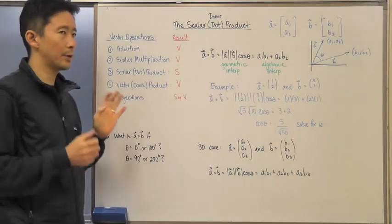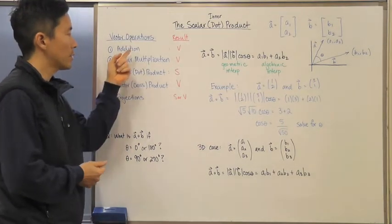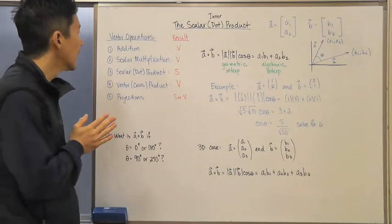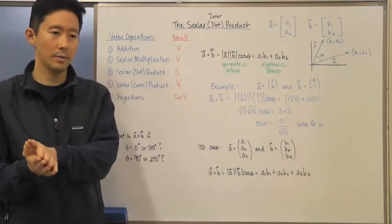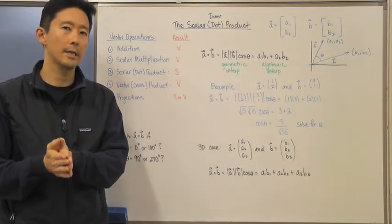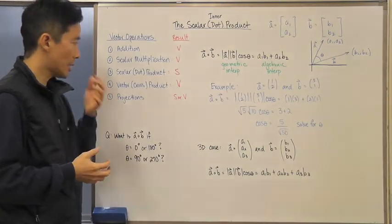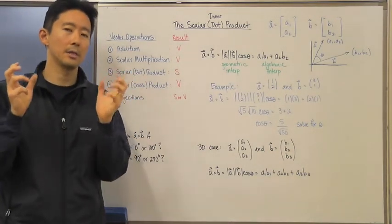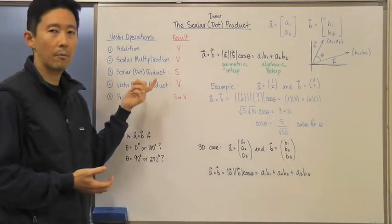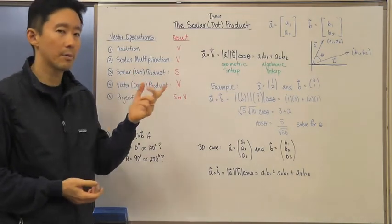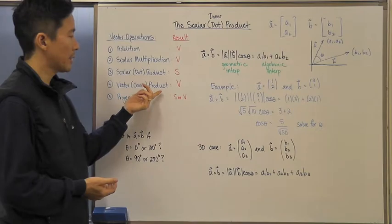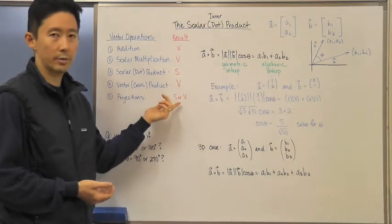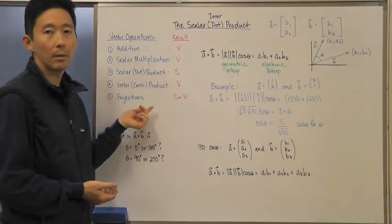Let's focus on what the result is for each operation. If we take any two vectors and add them, the result is always a vector. If we take a scalar and multiply it by a vector, the result is also a vector. But with the scalar or dot product — which is why it's called a scalar product — the result is actually going to be a scalar. That's essential to remember, and that's why it's named that way. The cross product gives a vector, and projections can give either a scalar or vector result depending on what you're looking for.